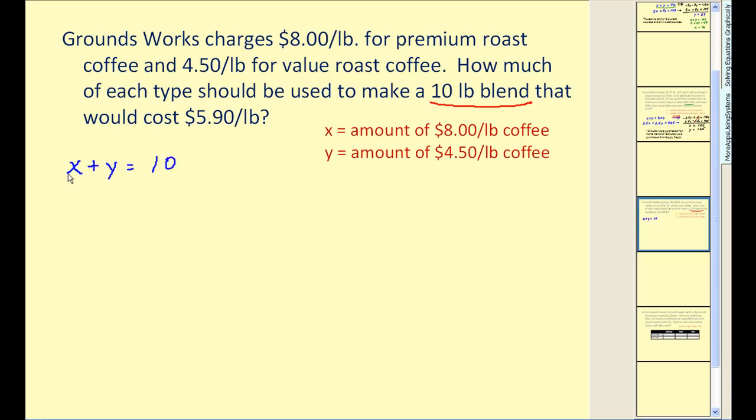The next equation will be what I'll call either the cost or value equation. Every pound of x costs $8. So $8 times x plus every pound of y costs $4.50. It must equal the value of the blend. Well, the value of the blend is $5.90, but it has to be times the amount, and the amount will be the sum of x and y. So what we have here is $8 times the amount of x plus $4.50 times the amount of y must equal $5.90 times the amount of the mix, which would be the sum of x and y.